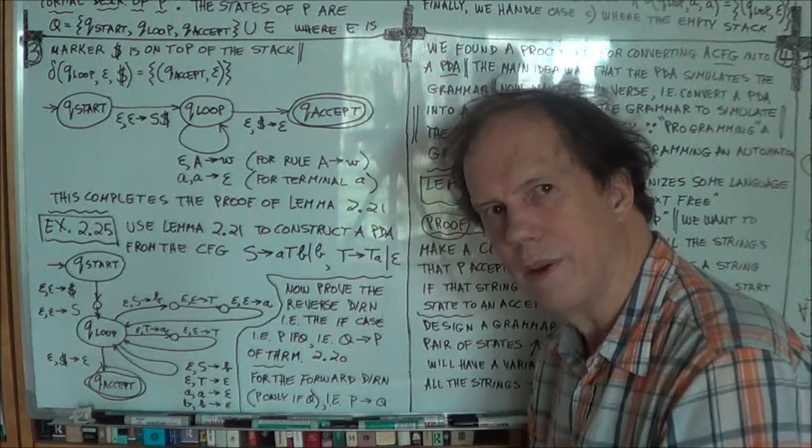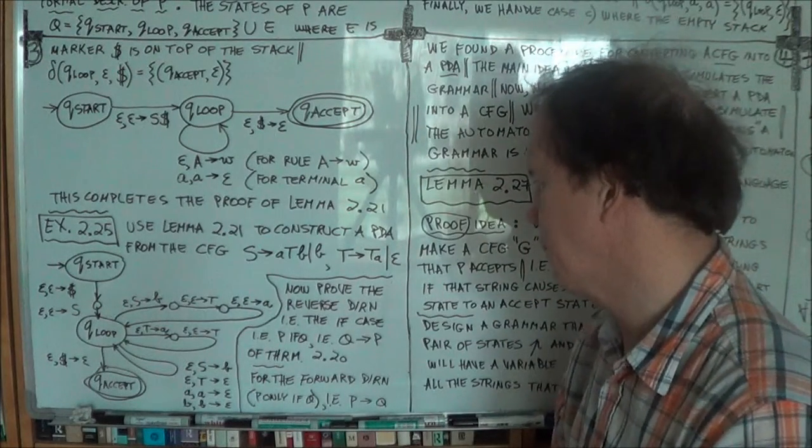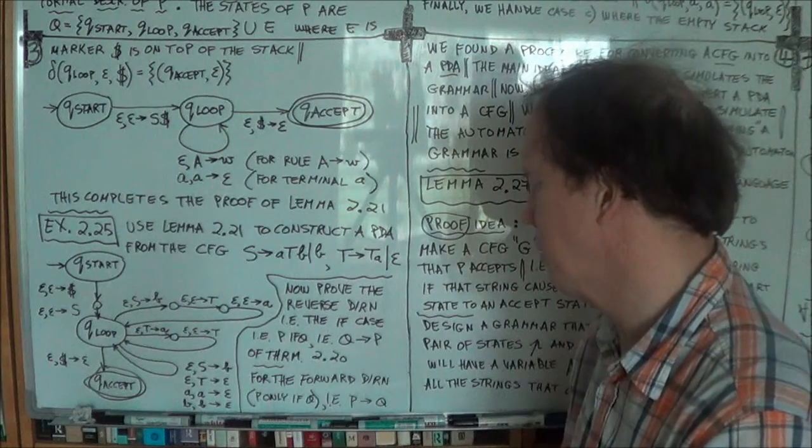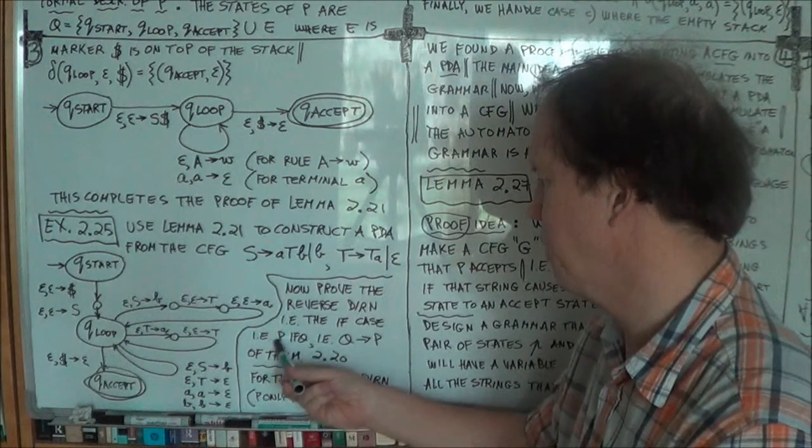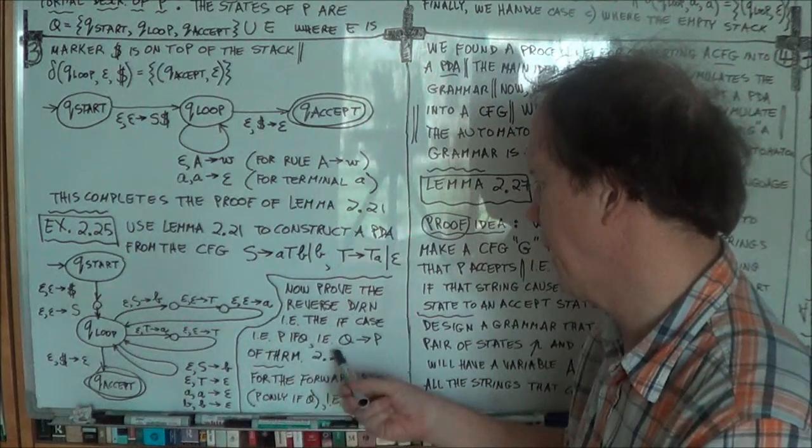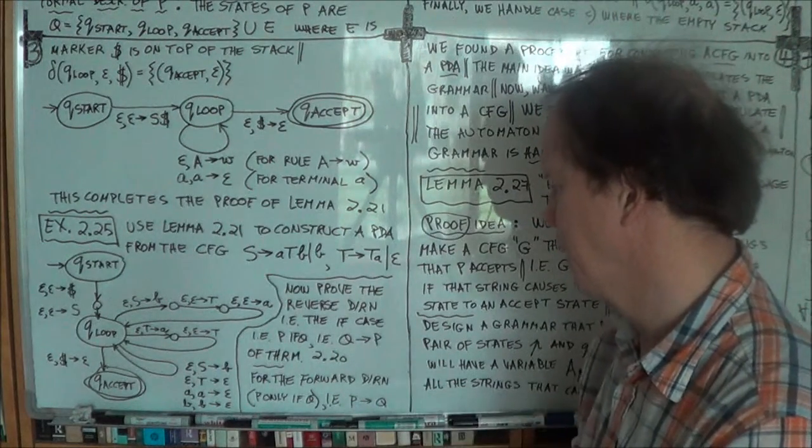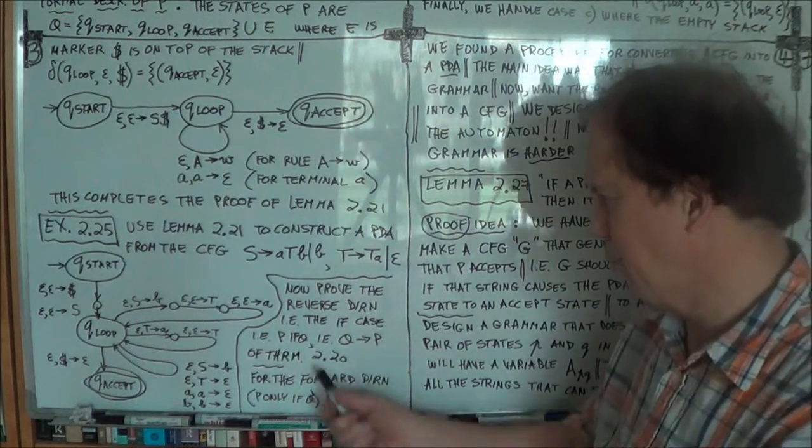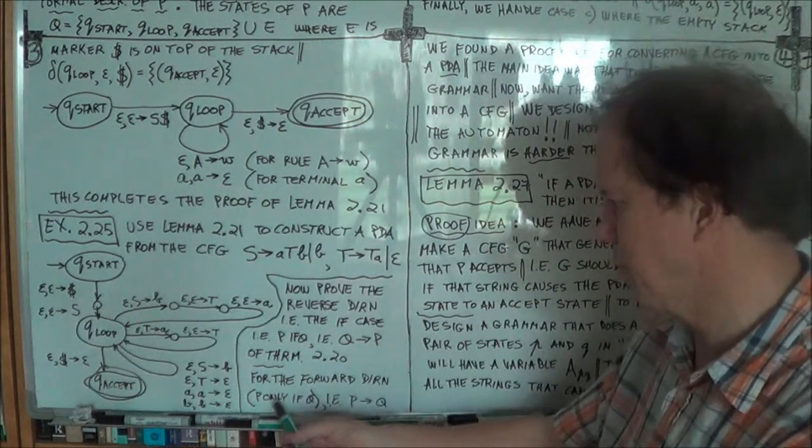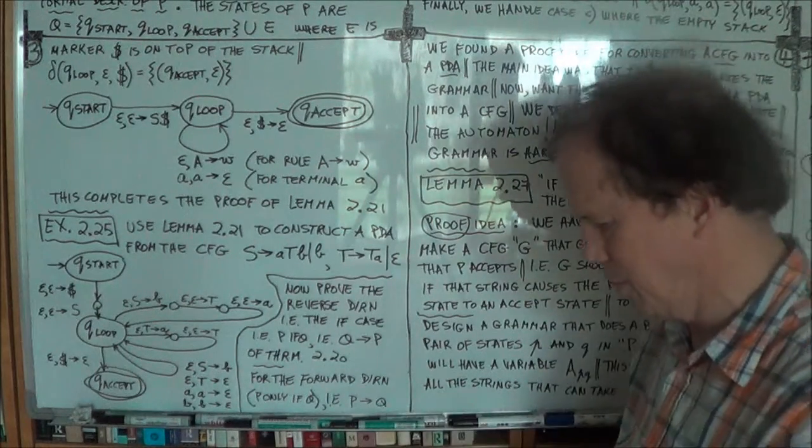We will now do the if part. So we'll do P if Q, and that corresponds to Q arrow P. Right? Now for what we did before, the forward direction, so P only if Q, that is P arrow Q. You know, if P then Q.